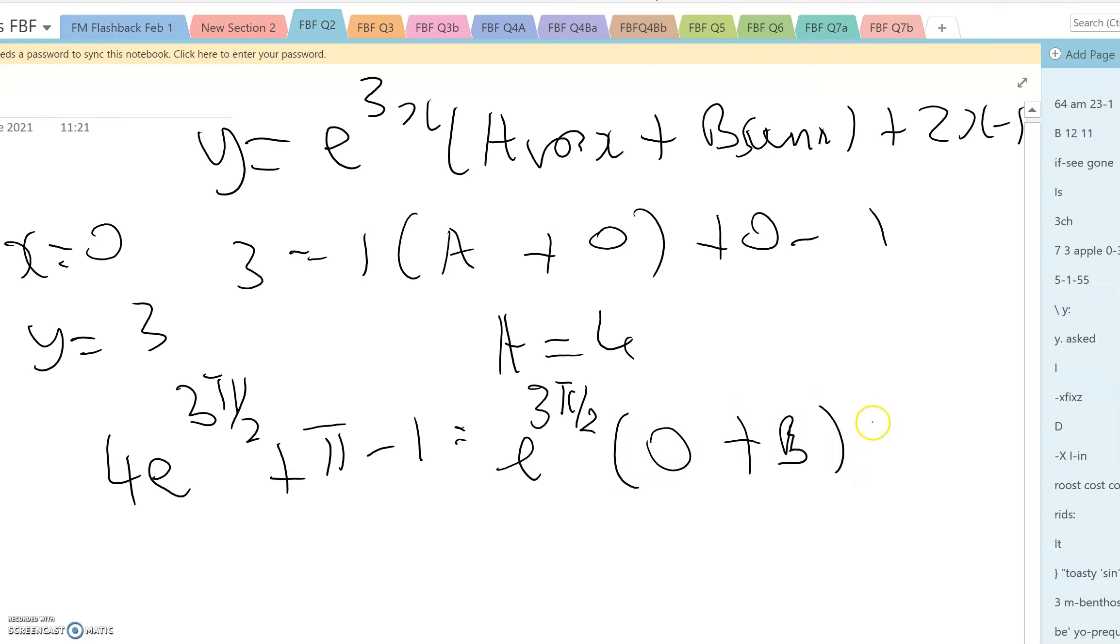x is pi over 2 means 2x is pi and then there's a minus 1. Pies cancel, minus 1s cancel, 3 pi over 2 cancels and that reduces to the fact that B equals 4.